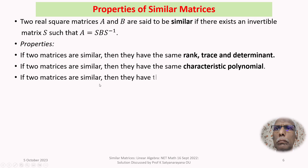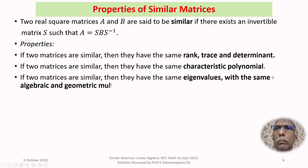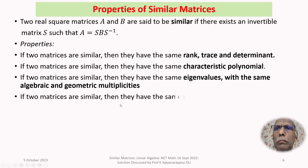If two matrices are similar, they have the same eigenvalues with the same algebraic and geometric multiplicities. If two matrices are similar, they have the same minimal polynomial. Out of the four options given, the first three are in fact properties of similar matrices.